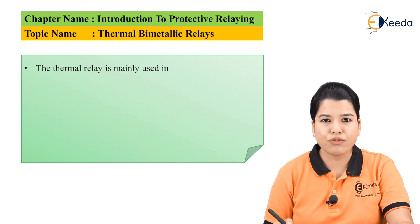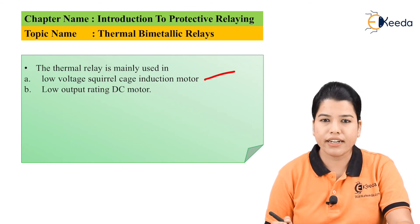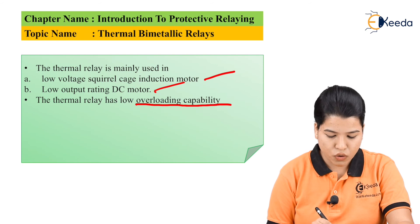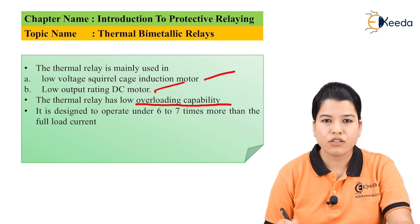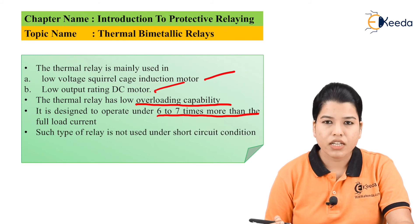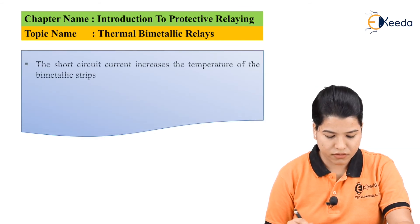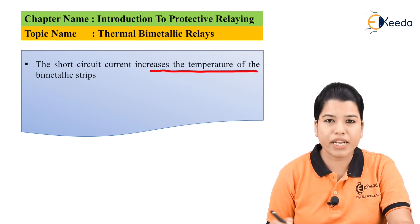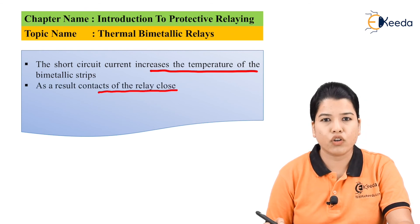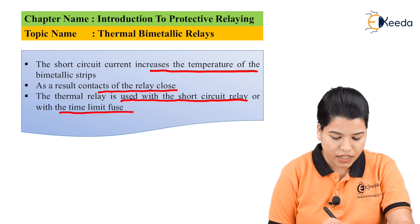Thermal relays are mainly used in low voltage squirrel cage induction motors and low output rating DC motors. The thermal relay has low overloading capability, so it is designed to operate at 6 to 7 times more than the full load current. Such relays are not used under short circuit conditions, as the short circuit current rapidly increases the temperature of the bimetallic strip. Therefore, the thermal relay is used together with a short circuit relay or with a time-limit fuse.